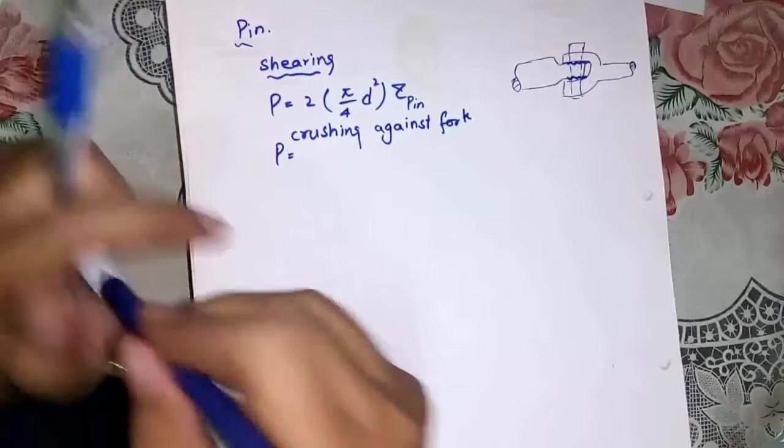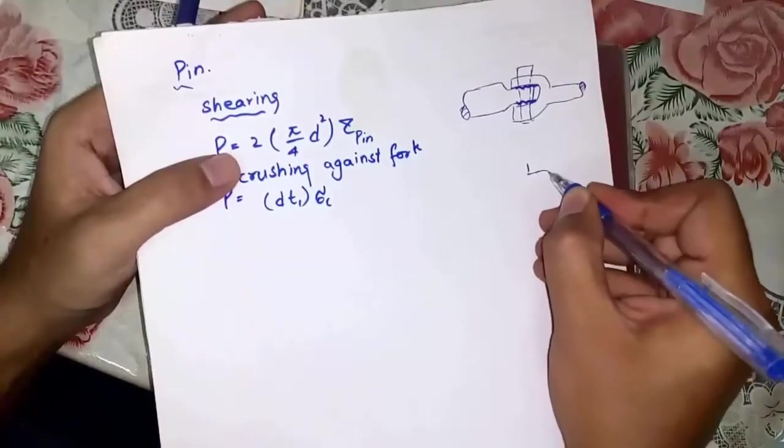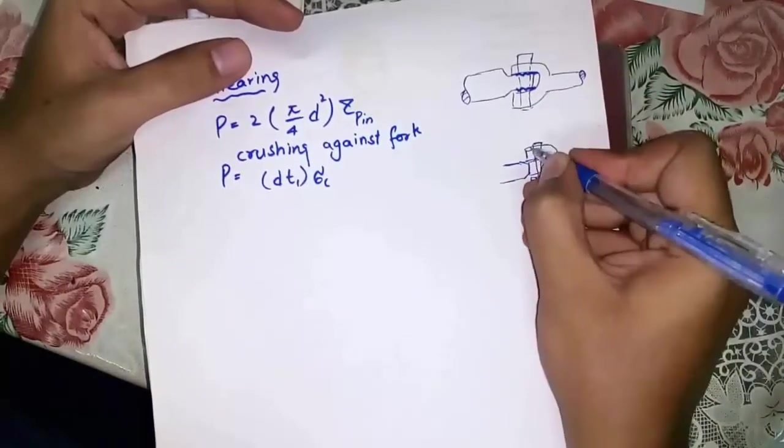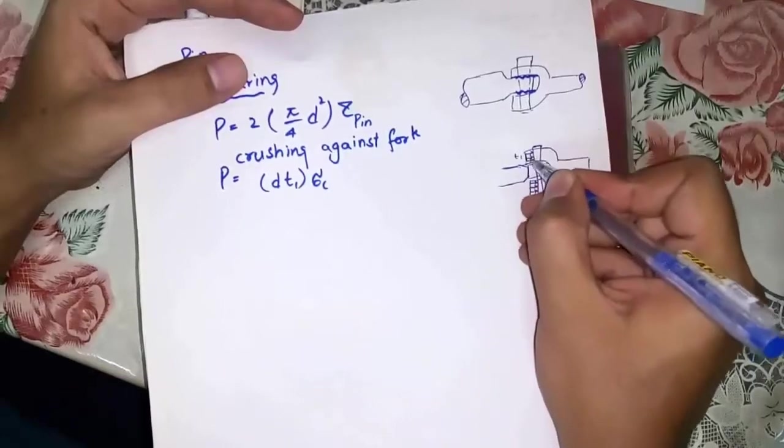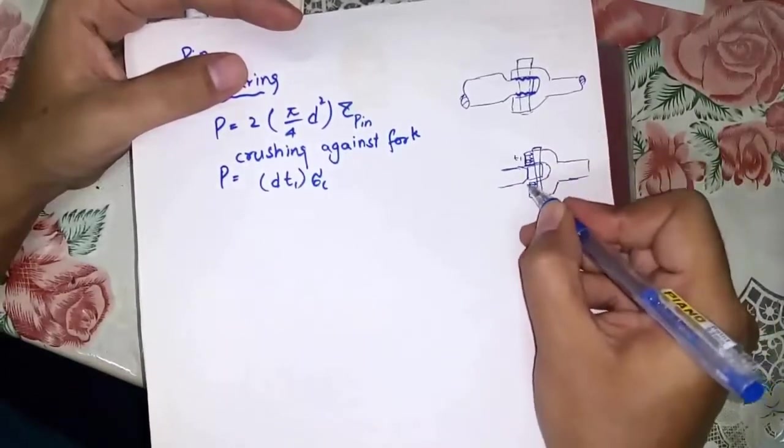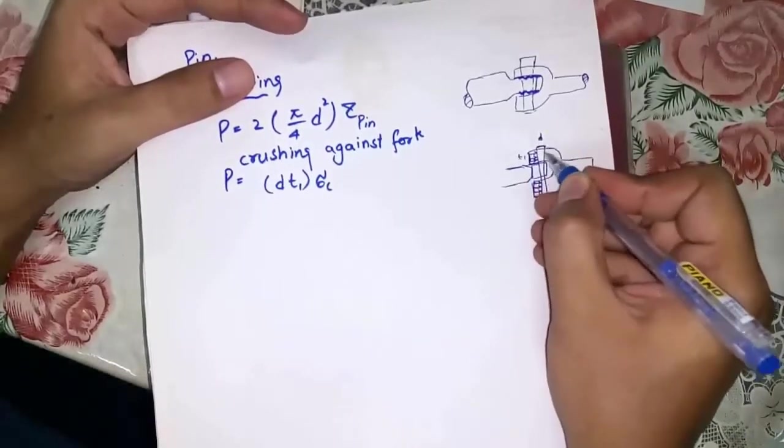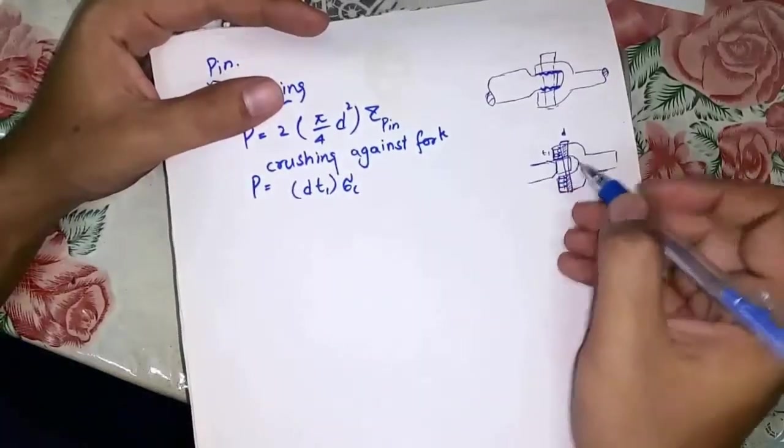Next failure is crushing against fork. Two ends of the fork compress the pin like this. d1 is the thickness of the leg of the fork, and small d is the diameter of pin. This part or this part may fail due to the compressive force of the fork.